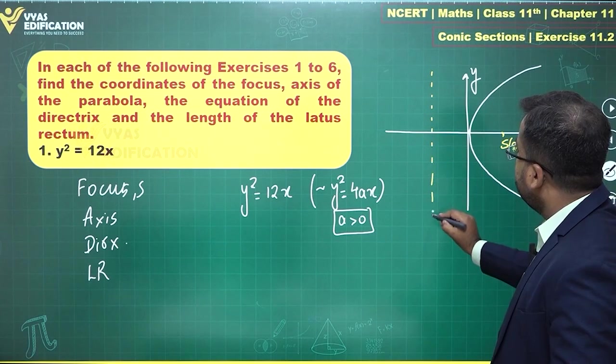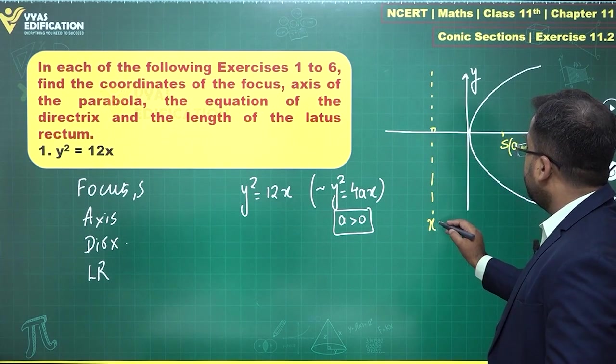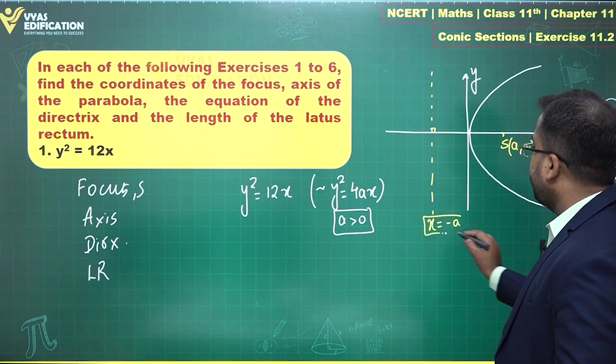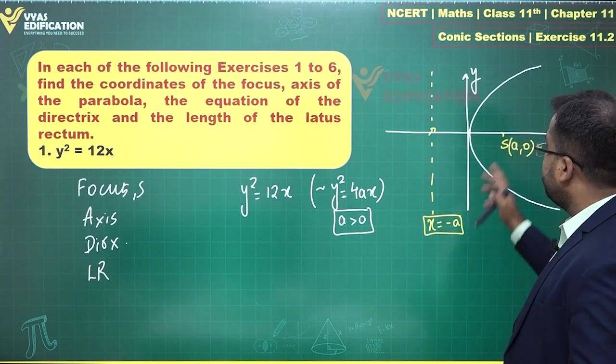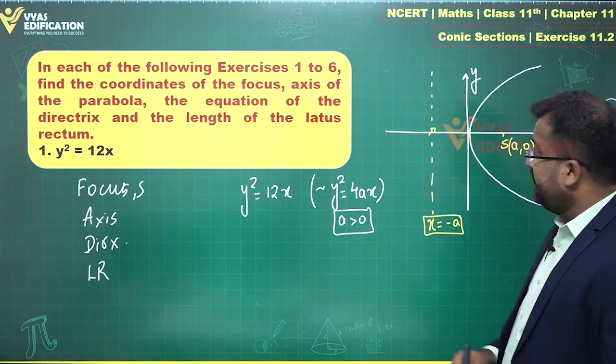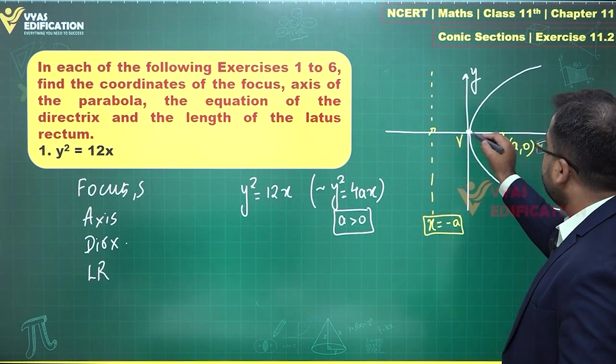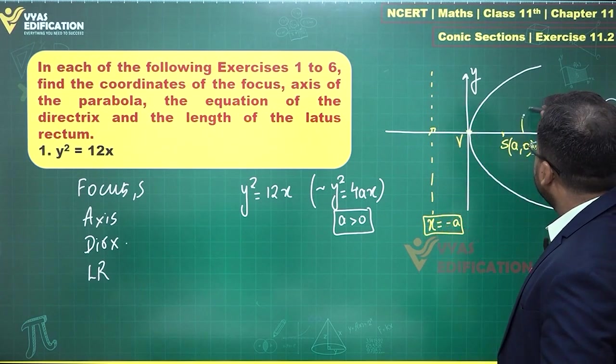this here will be the focus which have coordinates (a, 0). This here will be the directrix which will have equation X = -a. This point is (-a, 0). So, from the vertex a units along the axis, a units behind the axis. In this manner, this here is the vertex which is (0, 0).